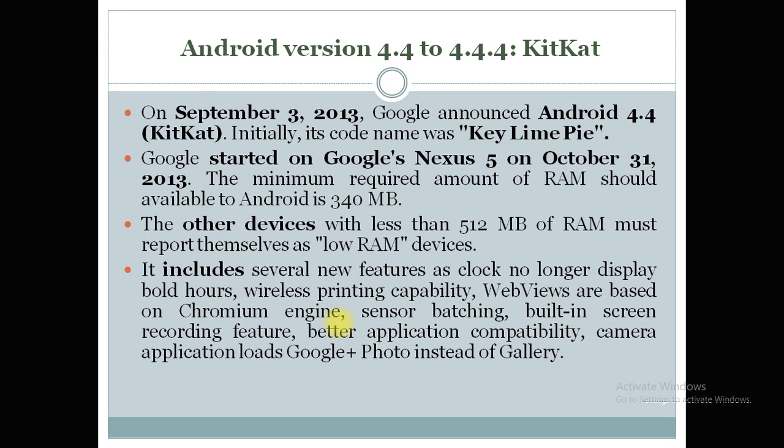KitKat features include: the clock no longer displays bold hours, wireless printing capabilities, WebViews based on the Chromium engine, sensor batching, built-in screen recording, better application compatibility, and the camera application loading Google+ photos instead of the gallery — so photos can be stored in Google+ instead of the local gallery.